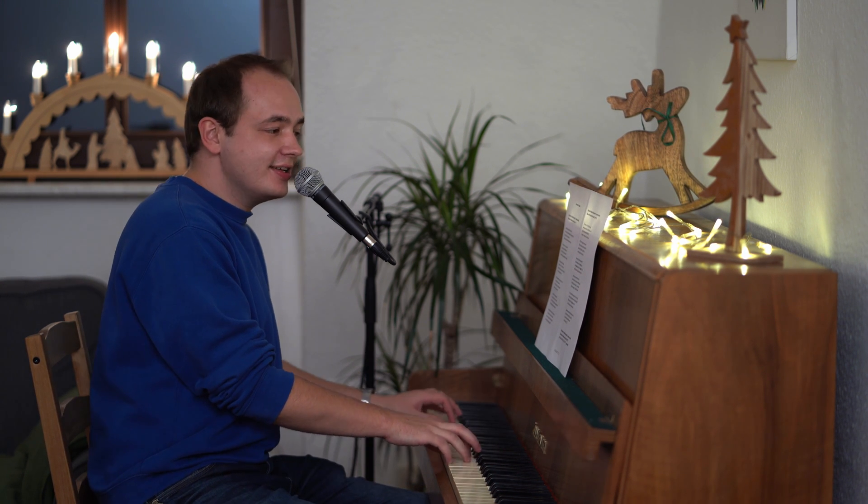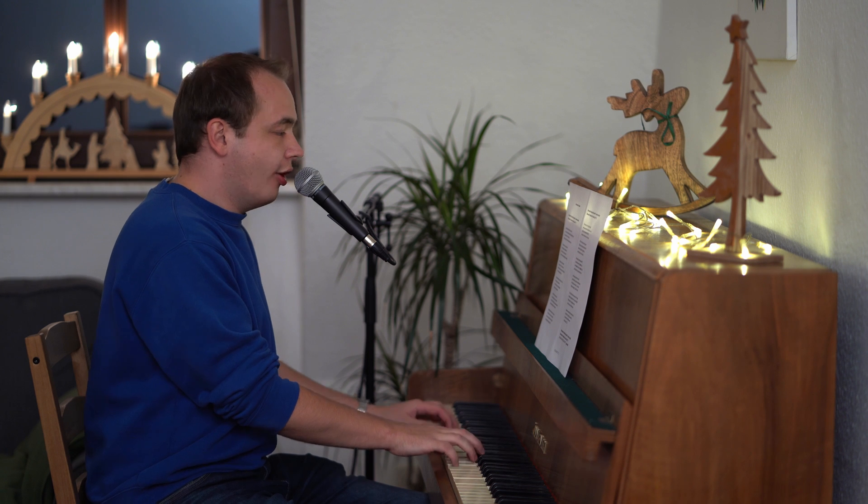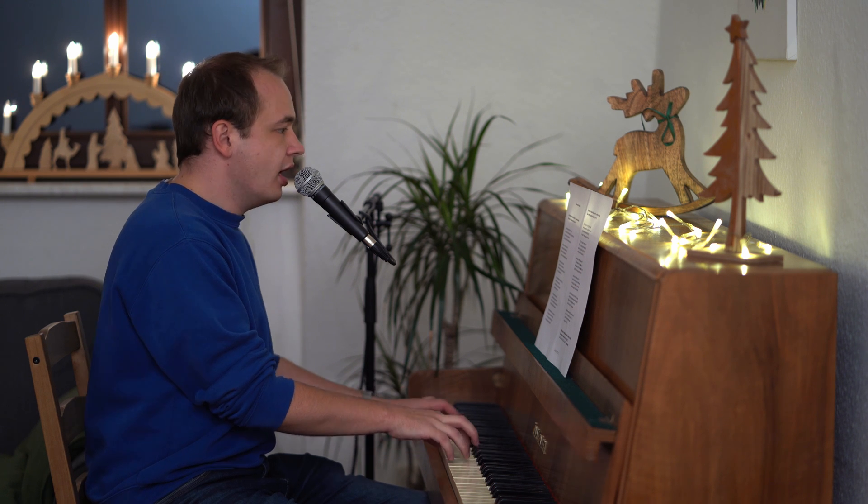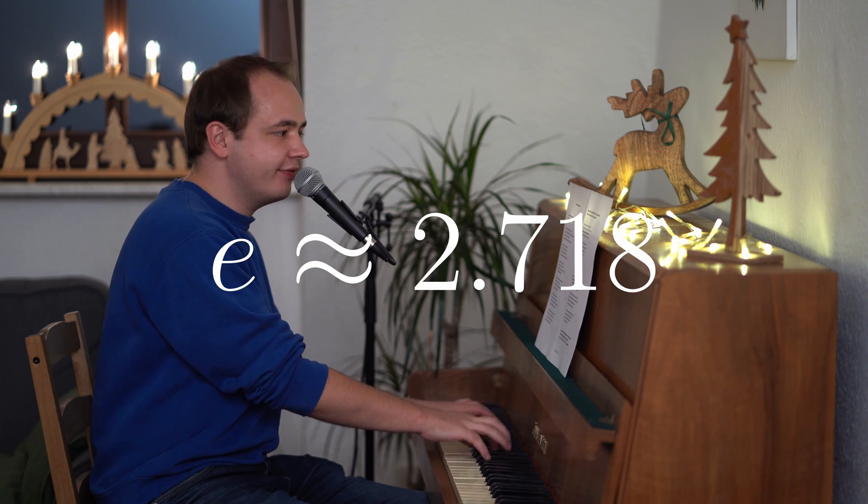Euler's number is irrational. Euler proved it, so there is no debate. Euler's number is irrational, and it's about 2.718.